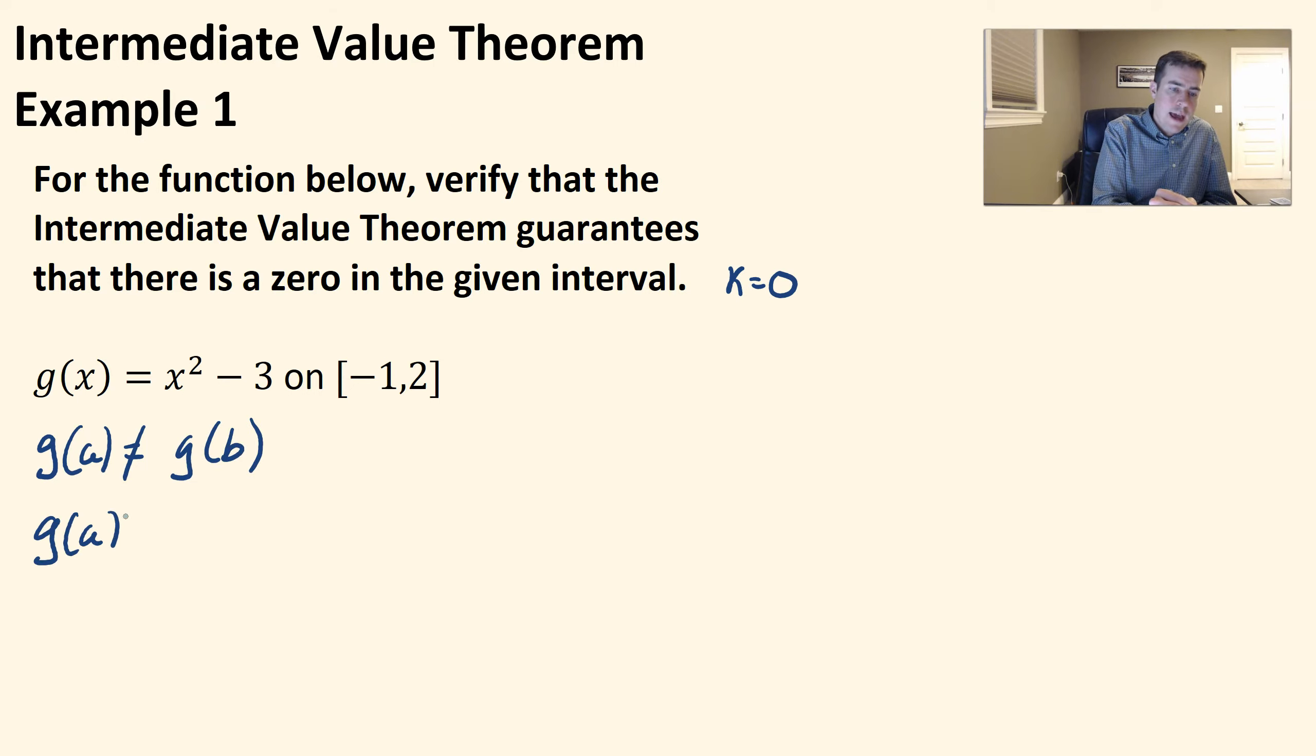So g of a here, which would be g of negative one, that's going to be negative one squared minus three. Negative one squared is one, one minus three is negative two.